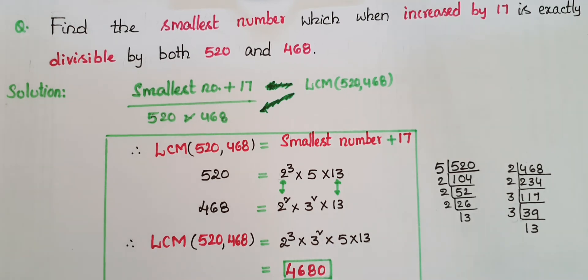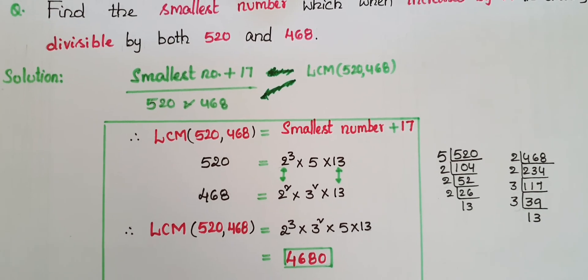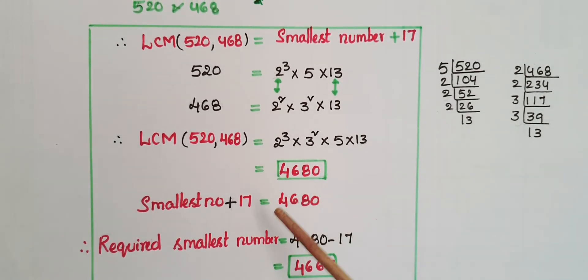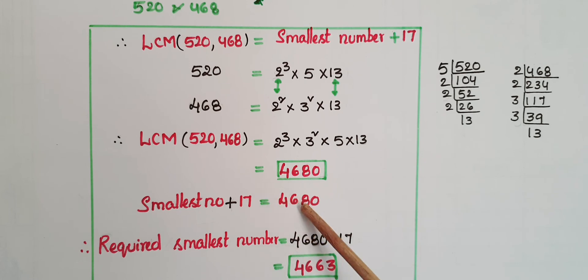This is the LCM of these two numbers. So smallest number plus 17 is equal to 4680, that is equal to LCM of these two numbers. Therefore, required smallest number is equal to 4680 minus 17, that is equal to 4663.